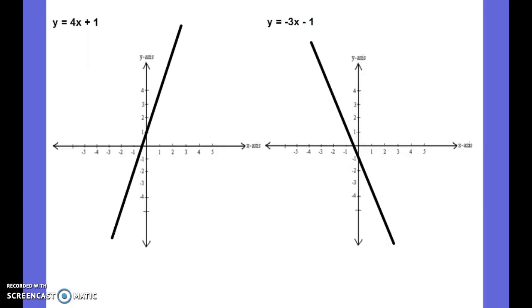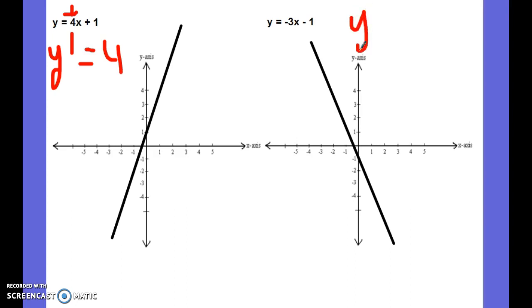Moving on to what we're doing now: we're going to use derivatives to explain what's happening in between certain points of a function. We have a linear function with a positive slope. The slope here is 4, so if you take y-prime you get y-prime equals 4. Number one, it tells you that slope is positive, meaning the function is above the x-axis.